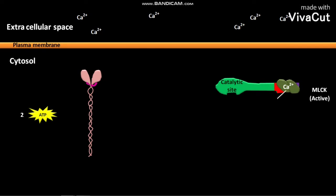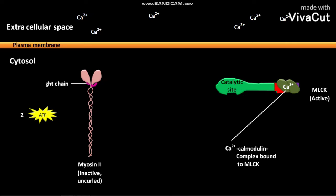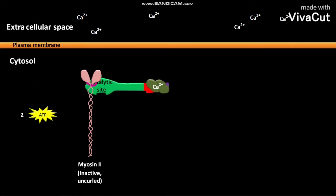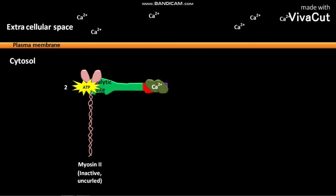The calcium-calmodulin complex is present in a bounded state to the active MLCK. The cytosol of the cell contains myosin-2 in its inactive uncurled state with myosin light chains. The active MLCK then binds to the inactive uncurled myosin-2, and the cytosolic 2-ATPs bind to the myosin light chains. In the presence of MLCK, 2-ATPs are converted to 2-ADPs and 2-phosphates.